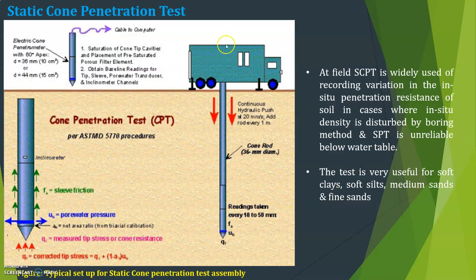The test uses a continuous hydraulic push at 20 mm per second, adding a rod every 1 meter. The cone rod is 36 mm in diameter and readings are taken every 10 to 50 mm. FS is sleeve friction, UB is pore water pressure, and QC is measured tip stress or cone resistance.